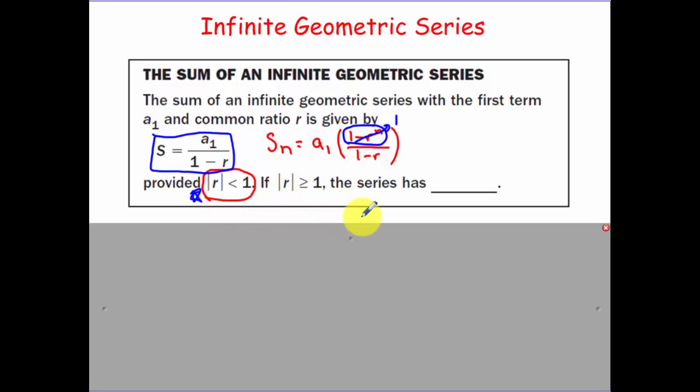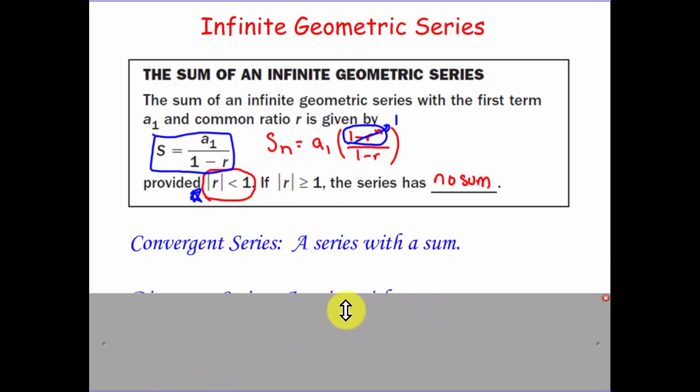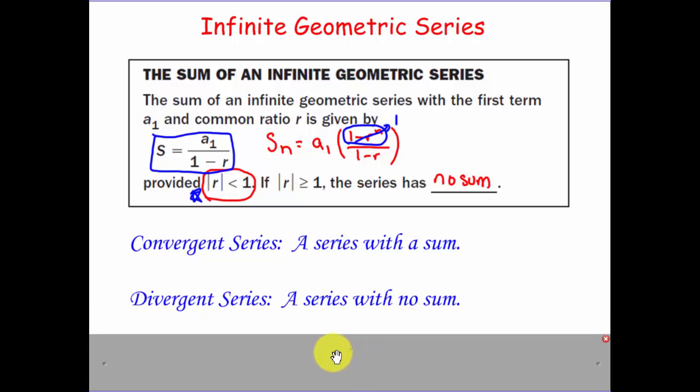If your ratio is greater than 1, we have no sum. And there's special words that we have now for if a series has a sum and has no sum. A convergent series converges to a number, a series with a sum. Divergent is a series with no sum.